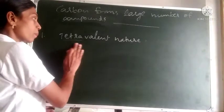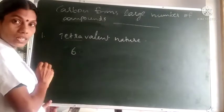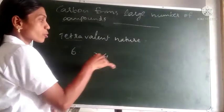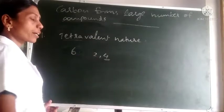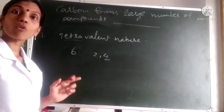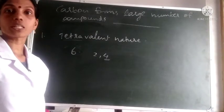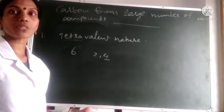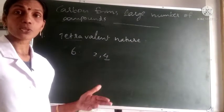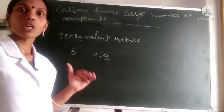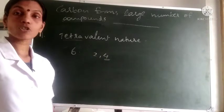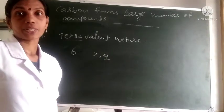In the case of carbon, we know that its atomic number is 6 and its electronic configuration is 2, 4. So the last shell contains 4 electrons, and it requires 4 more electrons to get stability — to get 8 electrons in the valence shell.